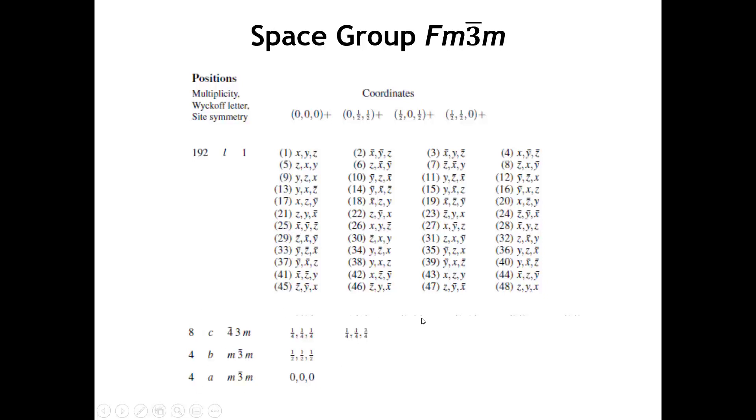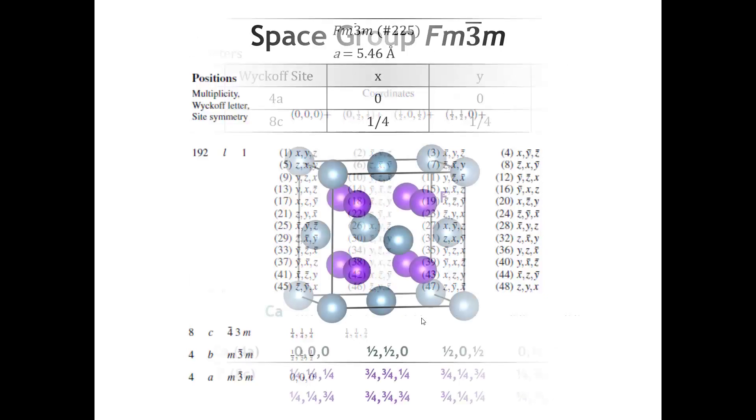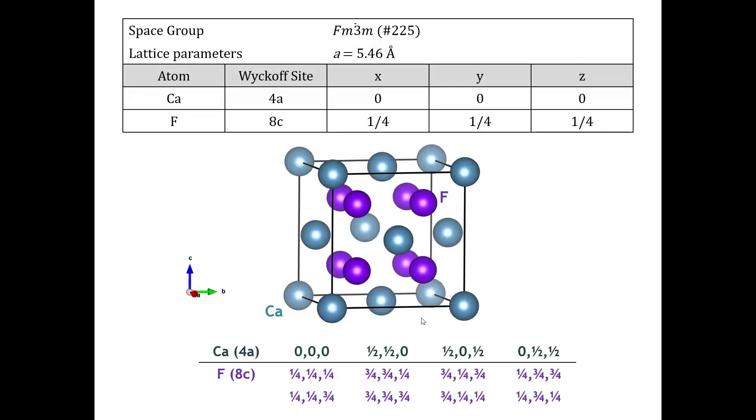So, if we were to draw our unit cell with all of the atoms that are either fully or partially in the unit cell, it would look like this. Here's our calcium atom at the origin, and then we use those generators at the top to put a calcium at 1/2,1/2,0. That's this one. 1/2,0,1/2. That's going to be this one.